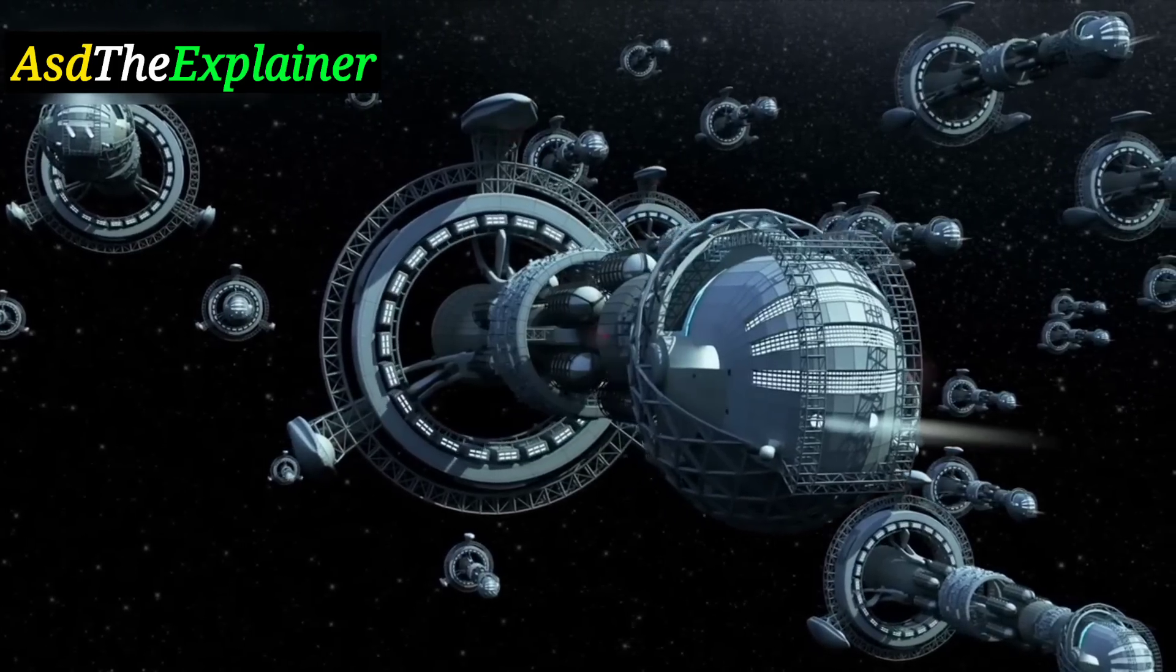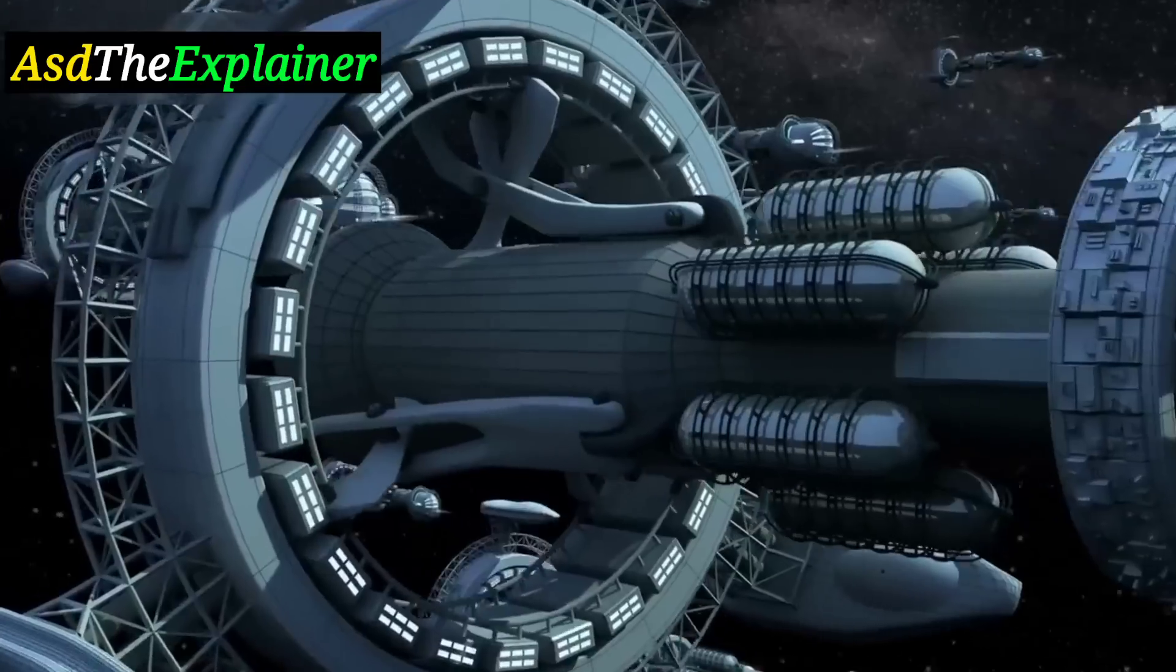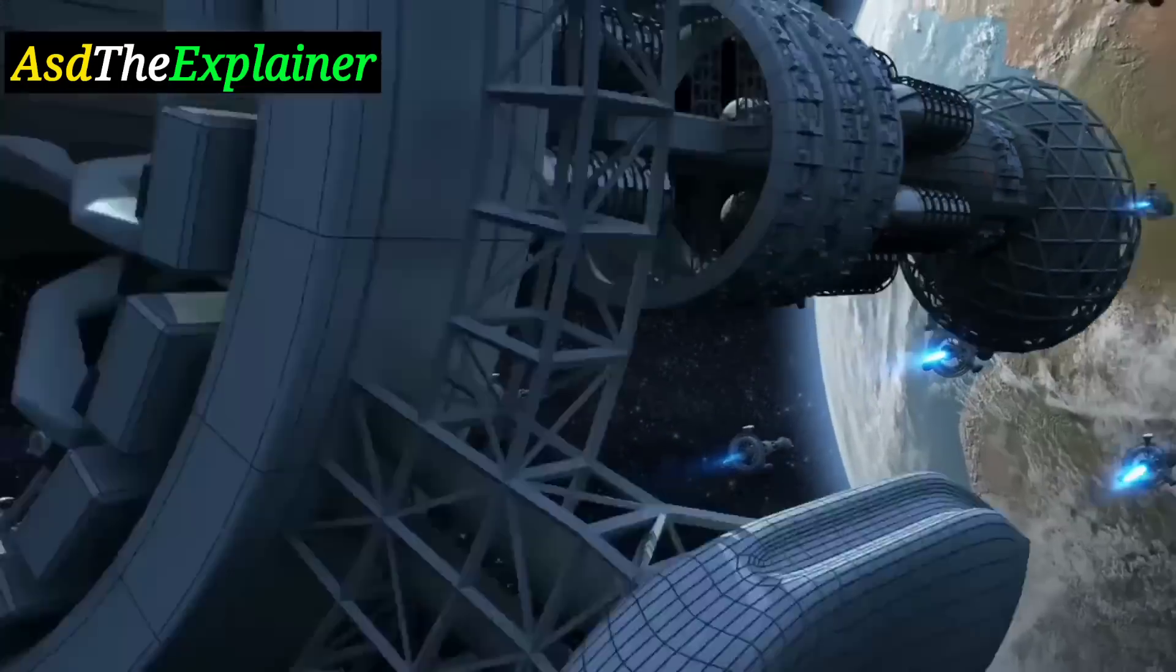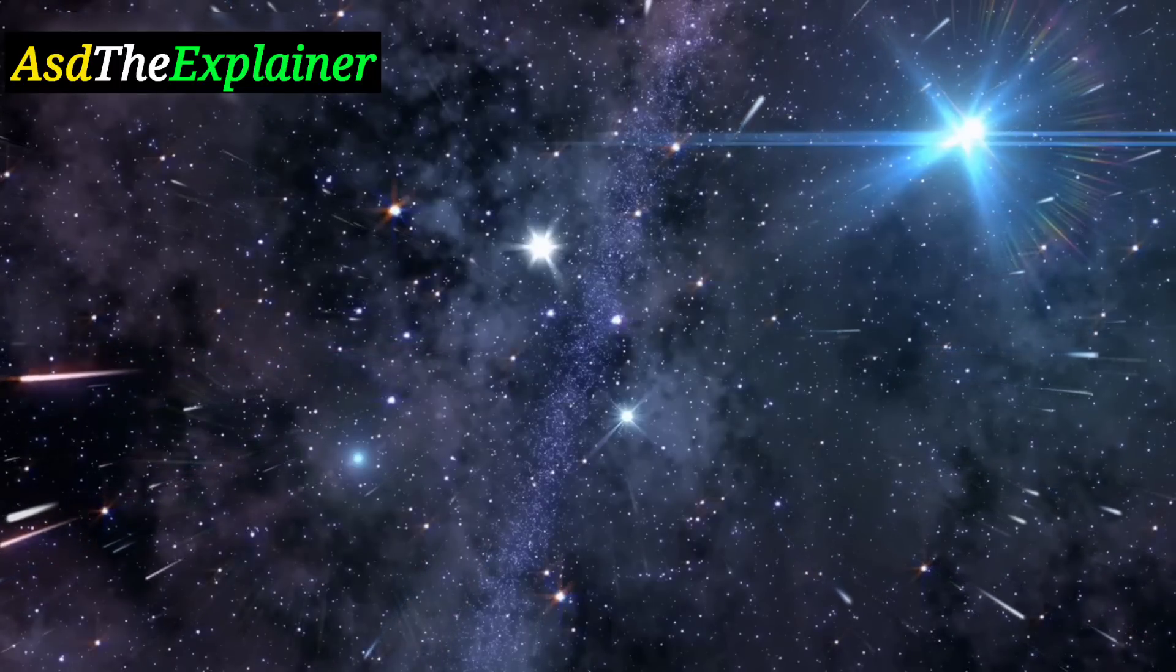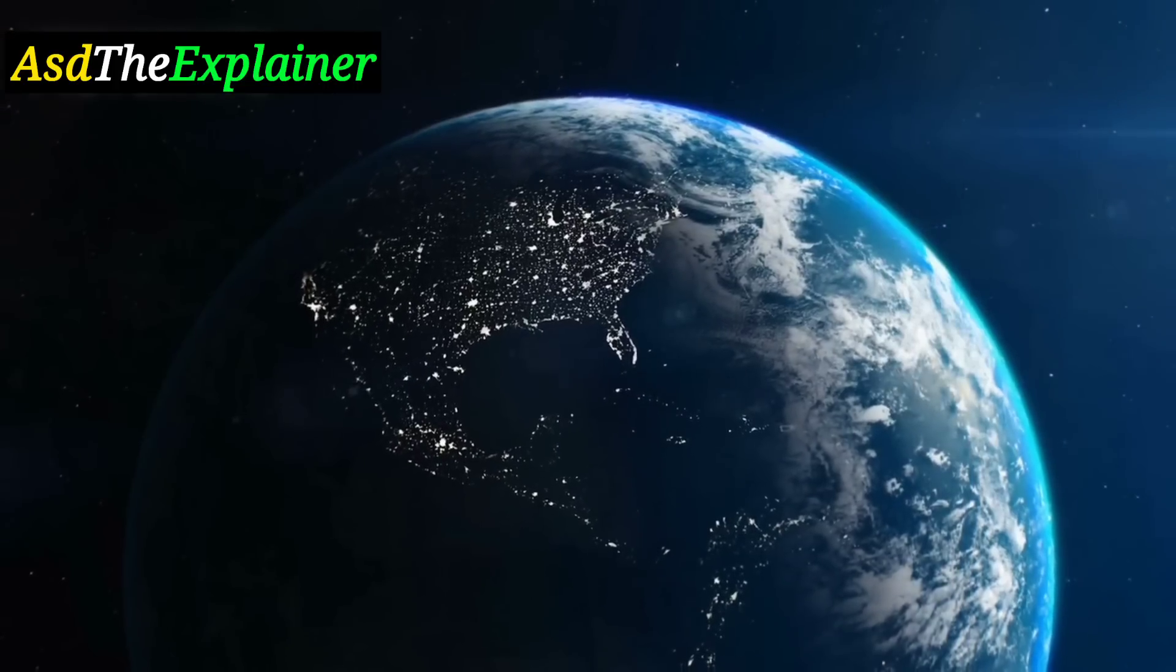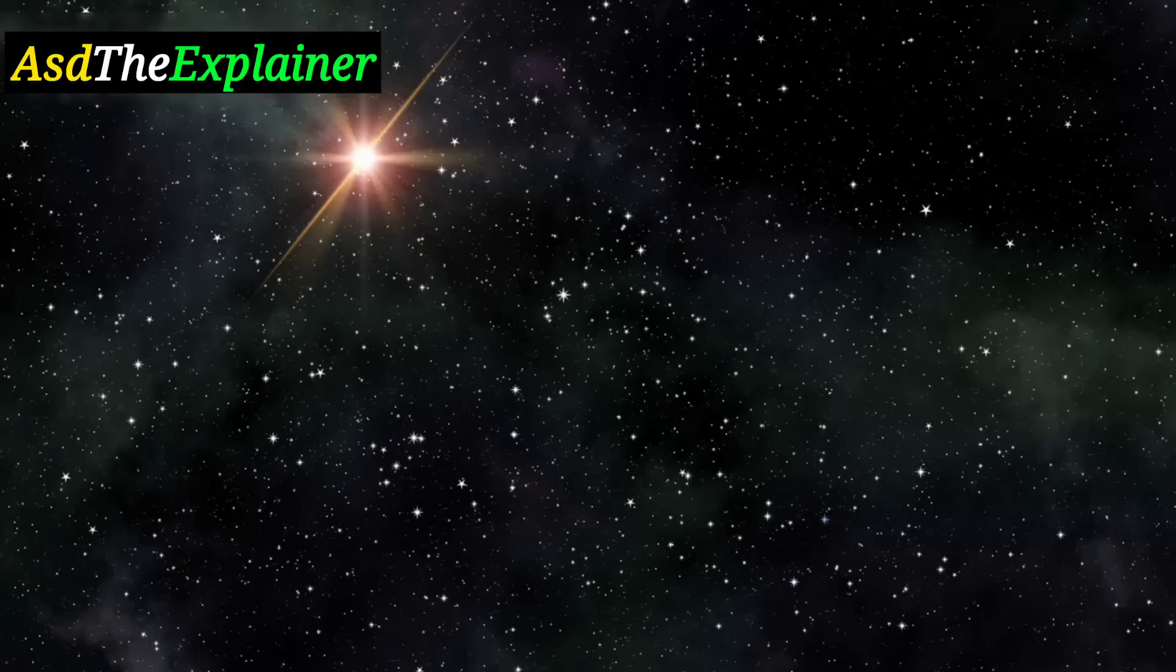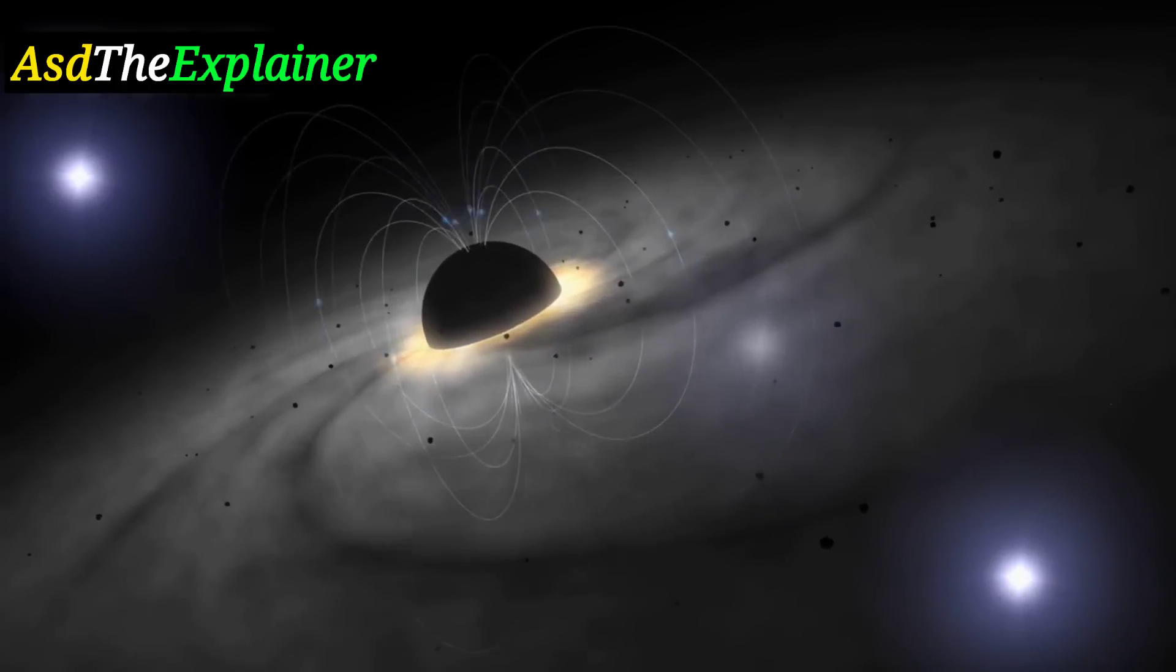The same stellar evolution process that unfolds for all main sequence stars could potentially obliterate various life forms, including advanced civilizations, before they can develop interstellar travel capabilities. Main sequence stars, which account for 90% of stars in the universe, include our sun. Conversely, it is also plausible that we are the last remaining civilization. Ample time has passed for highly advanced civilizations to conquer the stars, and many might have risen and fallen throughout the ages. However, some researchers propose alternative explanations.